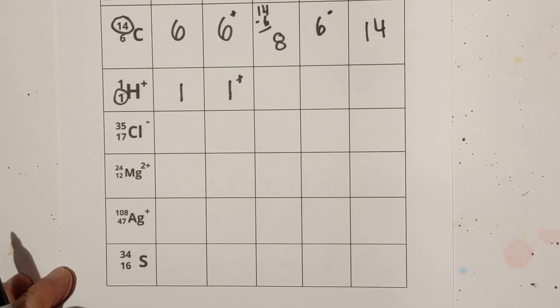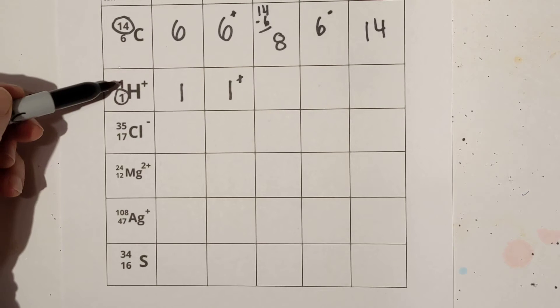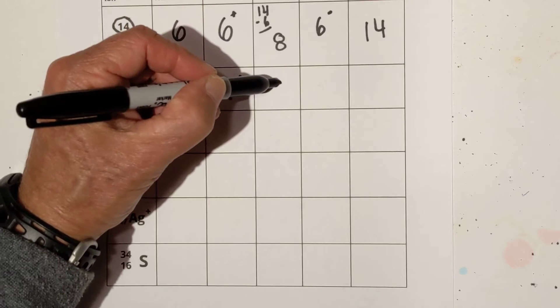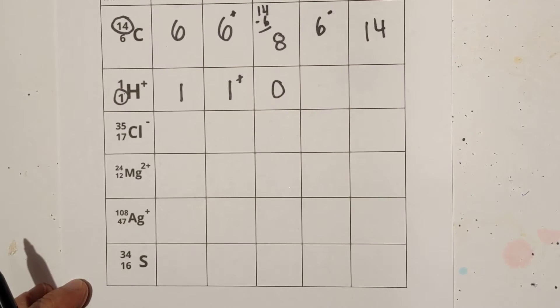Now for the number of neutrons. Well, it has a mass number of one, but it has one proton, so if you subtract one minus one, it's going to be zero. Yes, no neutrons.